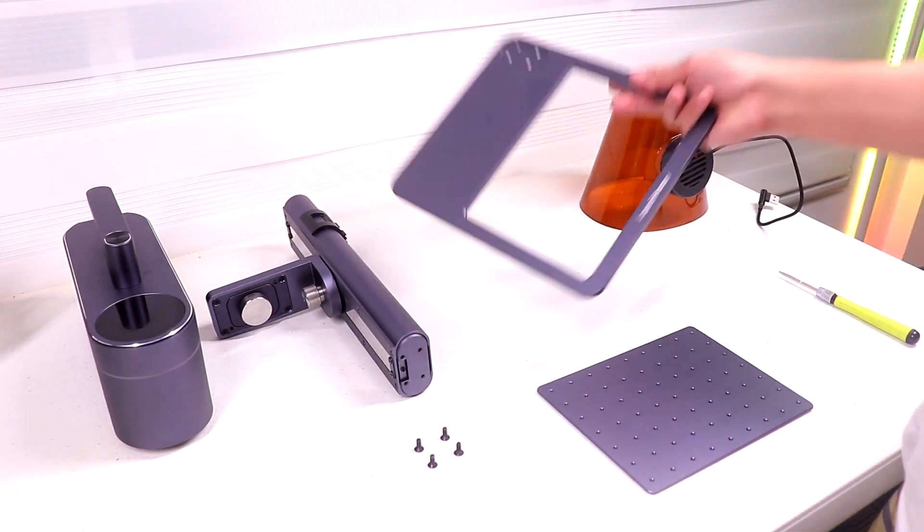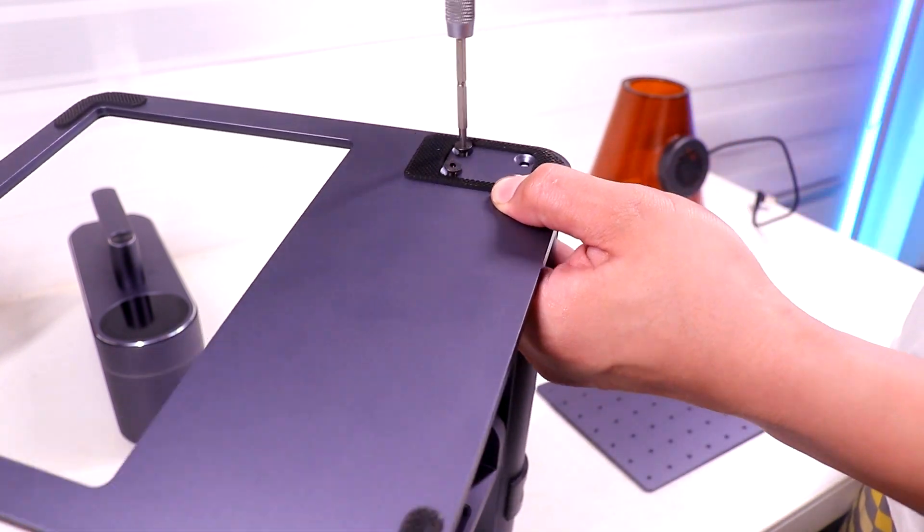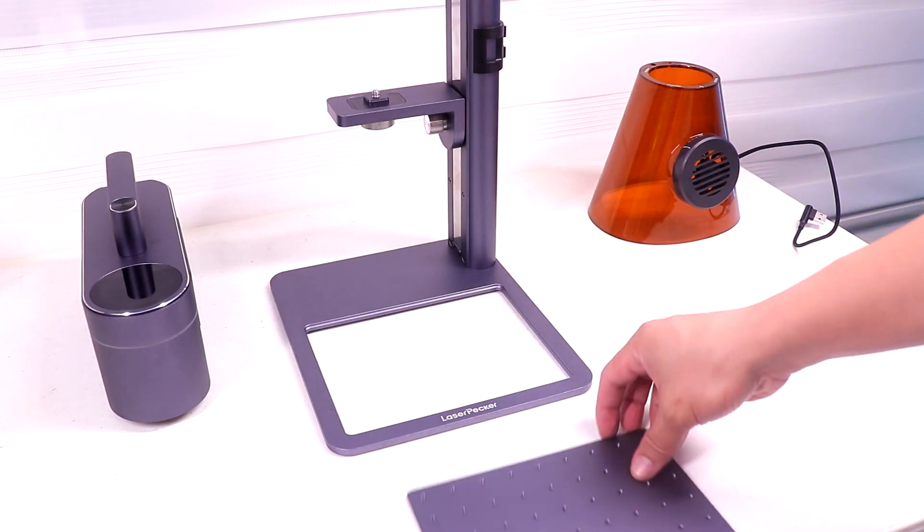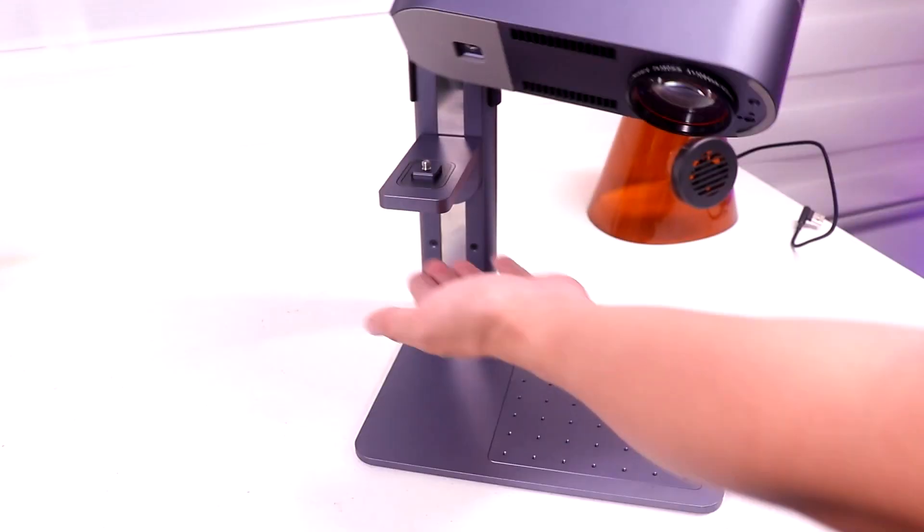Assembling the Laserpecker 4 is really easy. First, let's attach the base to the arm and secure it with 4 screws. And then put the engraving plate. Then attach the laser to the arm and tighten the knob below it.